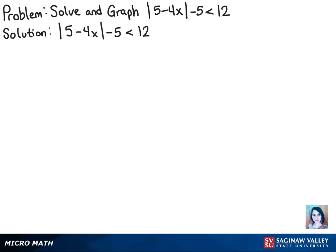Let's first start off by getting the stuff in the absolute value sign by itself. We can add 5 to the 12, and then that will give us the absolute value of 5 minus 4x is less than 17.